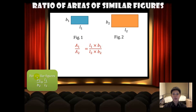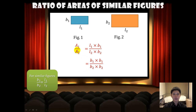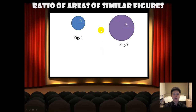Because the figures are similar, the ratio of the corresponding lengths are equal, and hence we can replace l1 over l2 with b1 over b2. Simplifying, we will have A1 over A2 equals b1 over b2, squared.